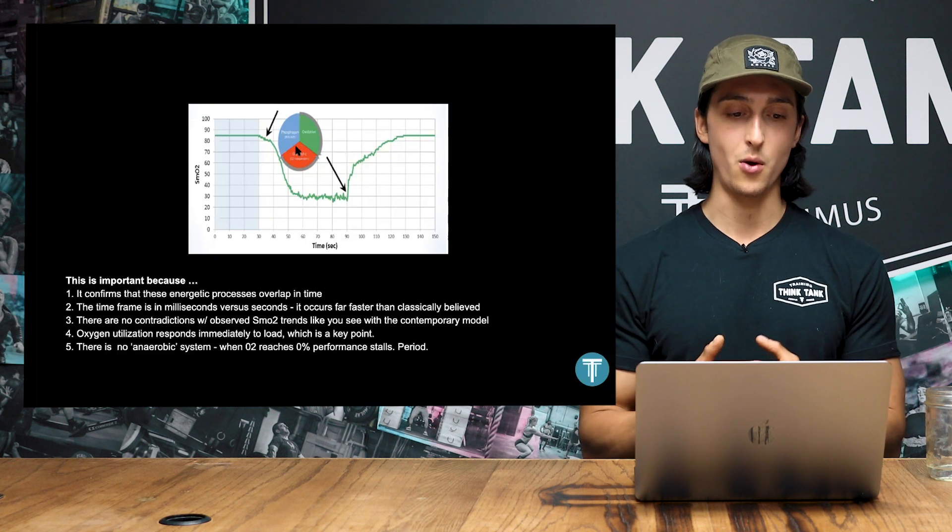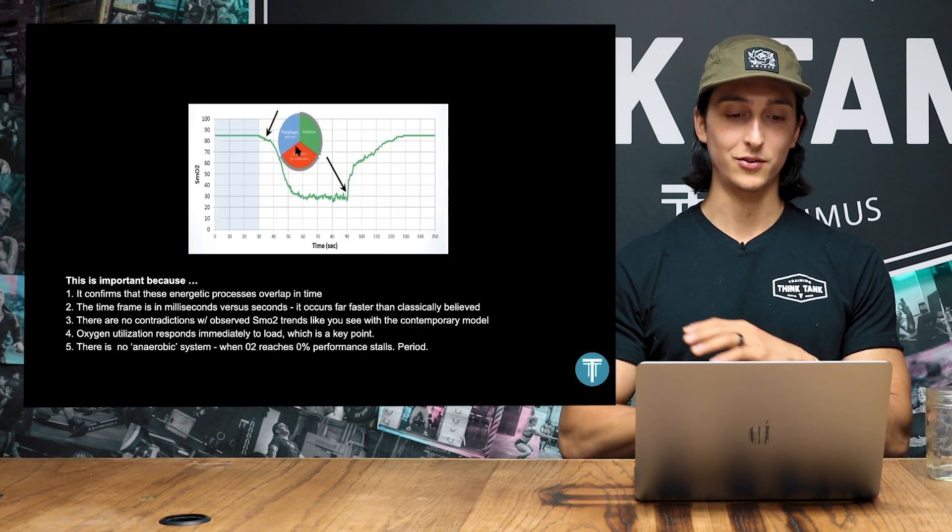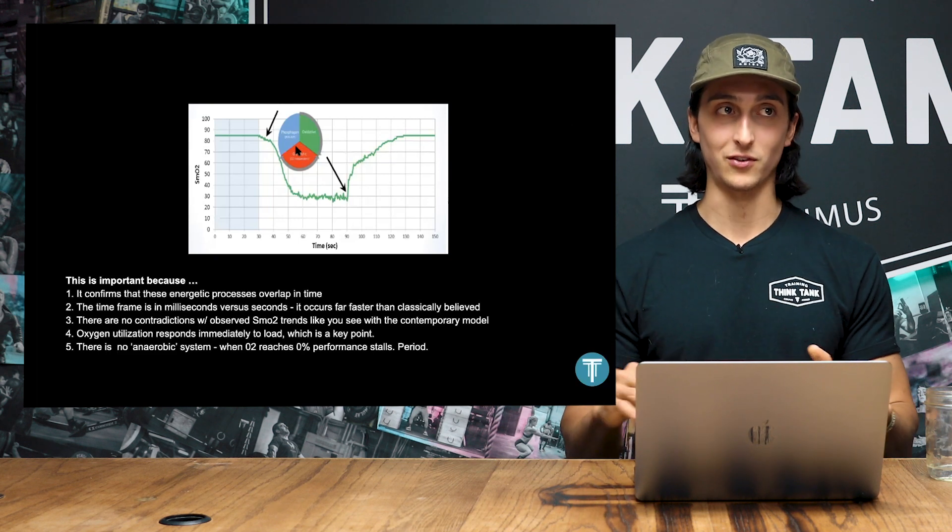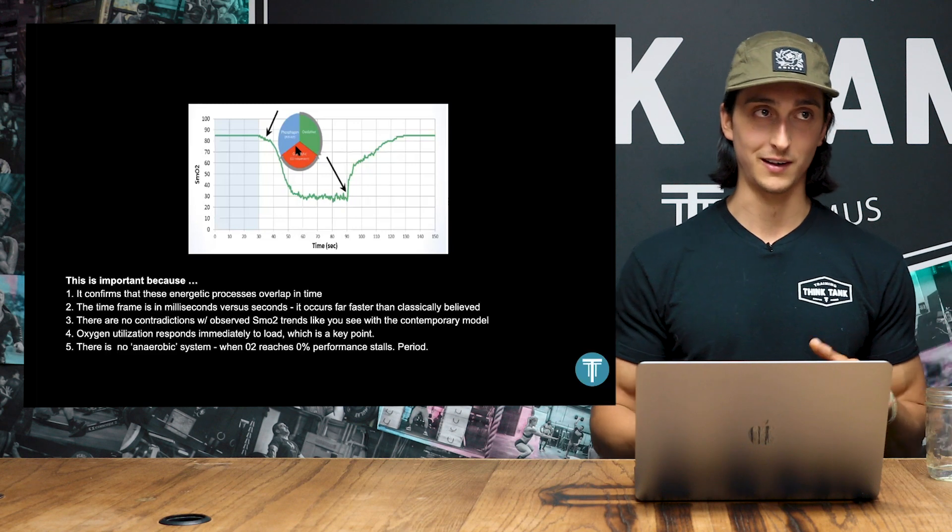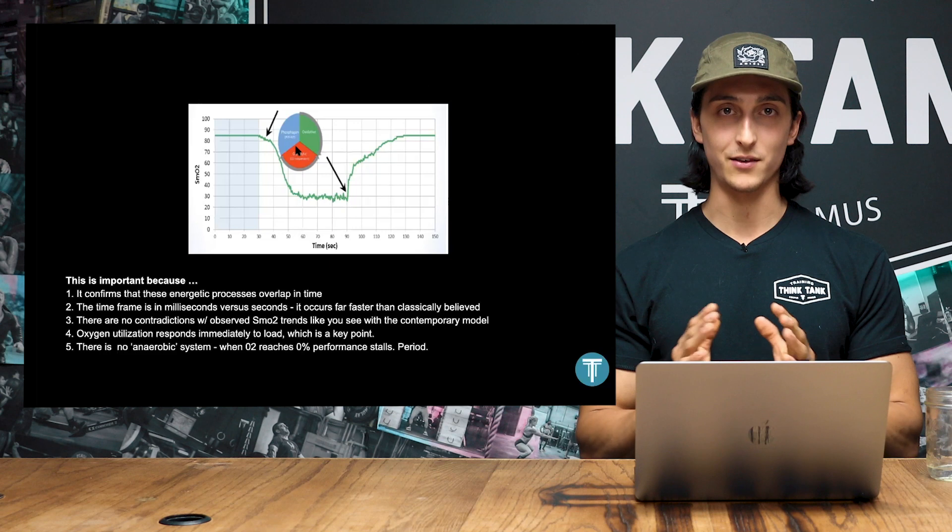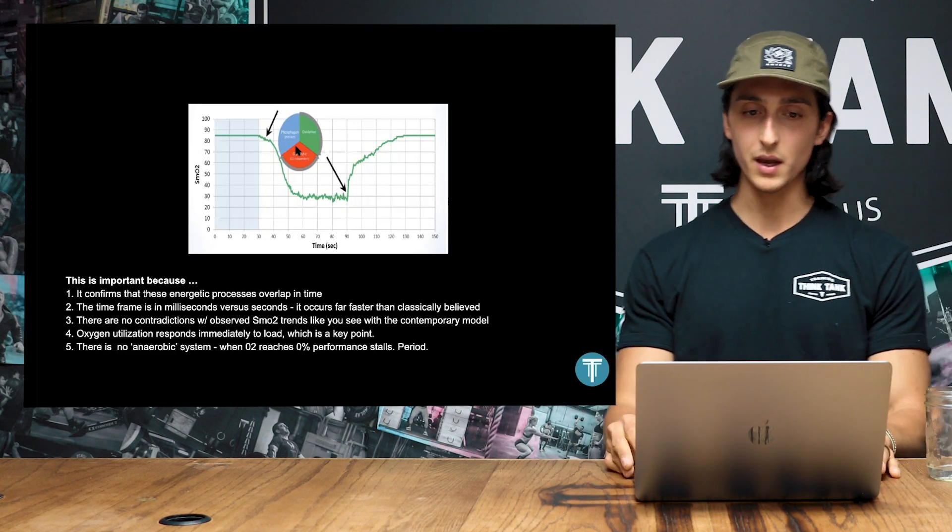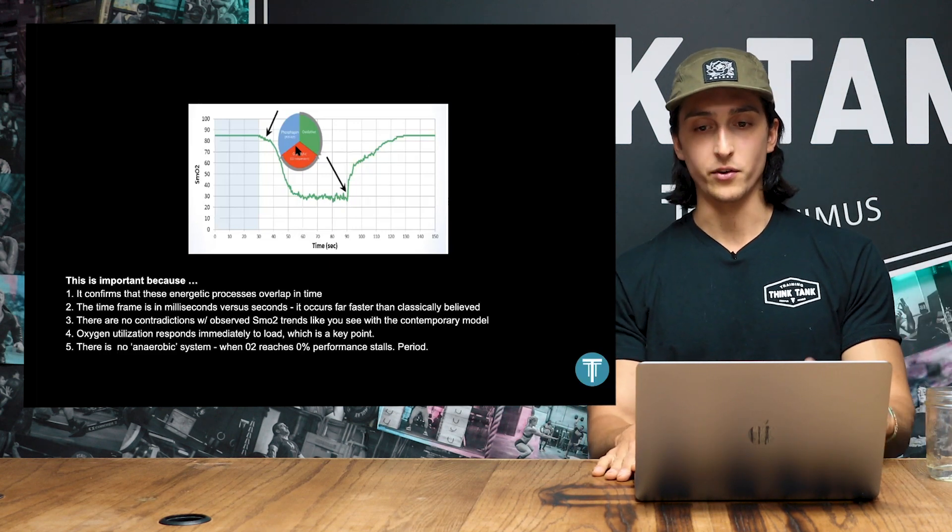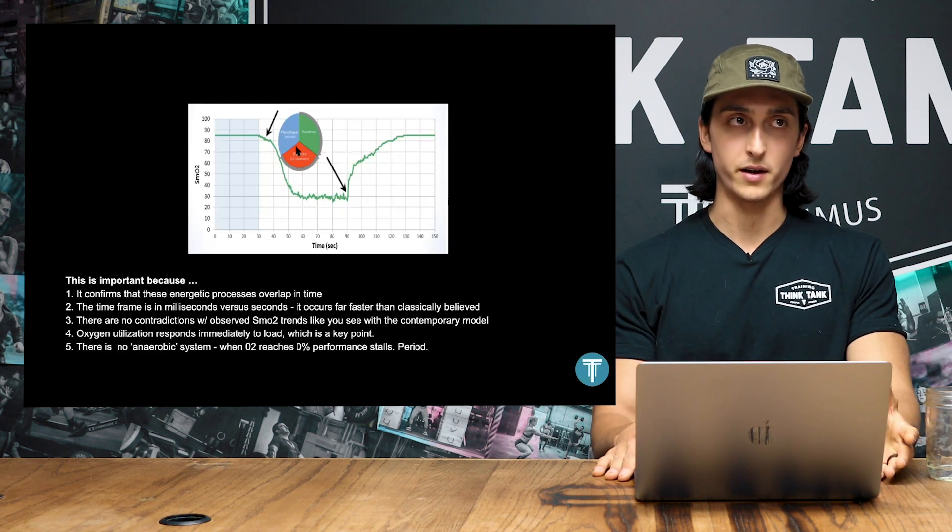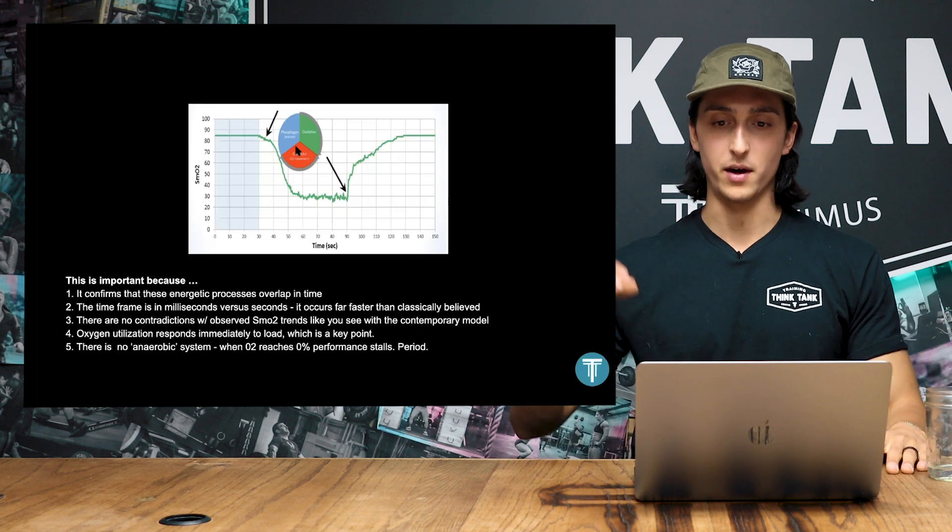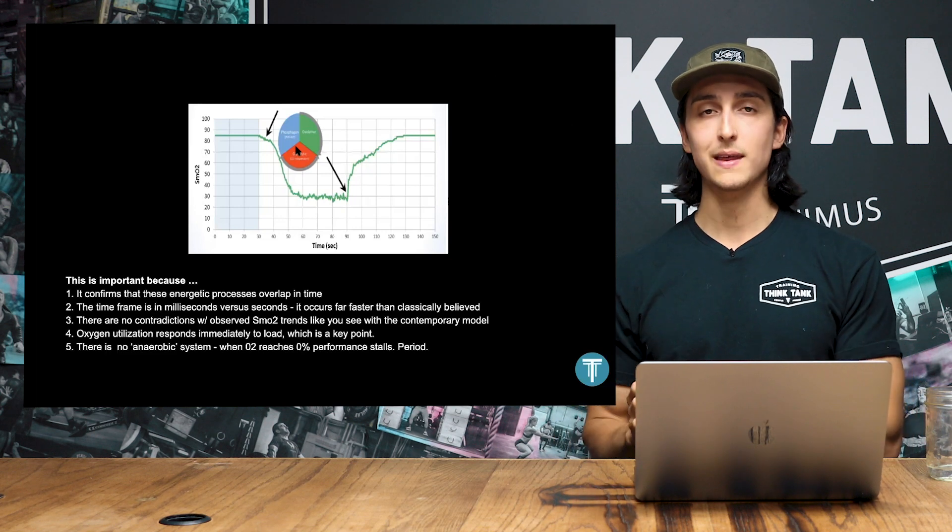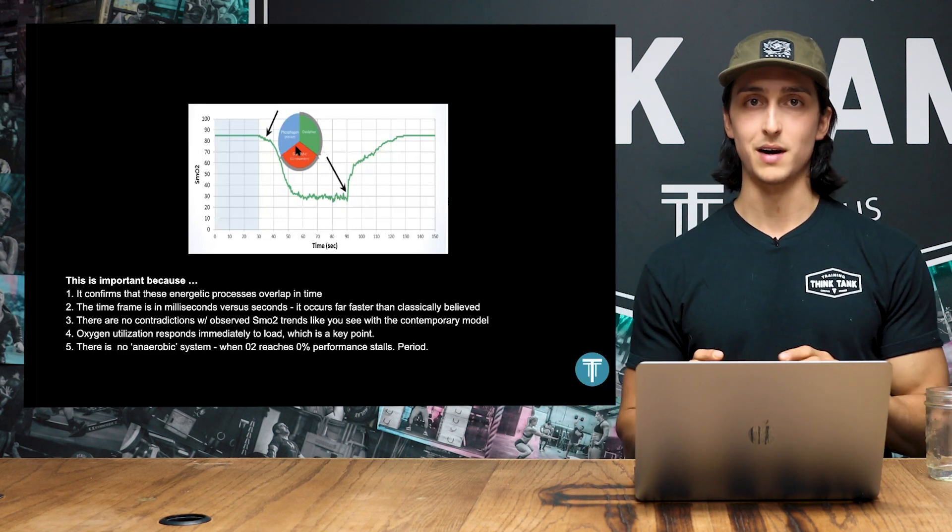And then the next thing is there's no anaerobic system. When oxygen hits 0% and we are anaerobic, you're pretty much fucked. Performance is going to stall out, period. That's where you see someone running and it looks like they're trying to bite their ear because their head's flailing all over the place. So that's not something that we could rely on. And what makes this interesting is, well, if there's no anaerobic system, what differentiates a sprinter from a marathoner? It's not that a sprinter is an anaerobic athlete and a marathoner is an aerobic athlete. These things aren't fundamentally different in type. The only thing that differentiates them is the rate of oxygen utilization.